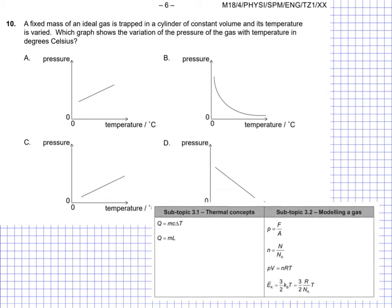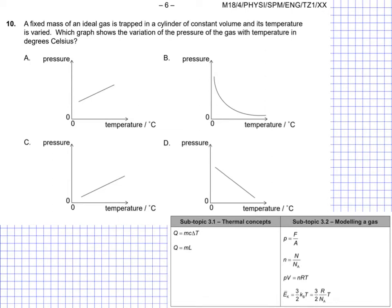So I'm just gonna bring this into play, pop it down here, and let's think about the question. So we have this gas, it's trapped in the cylinder, constant volume, and its temperature is varied.